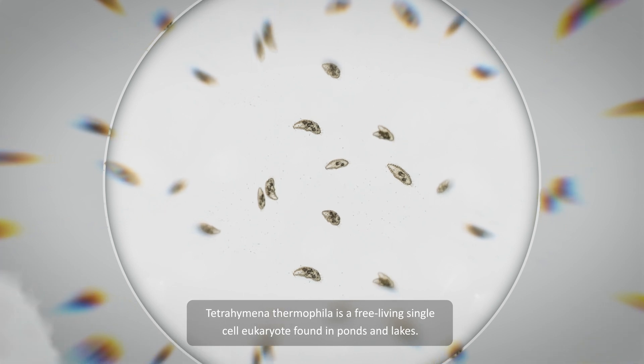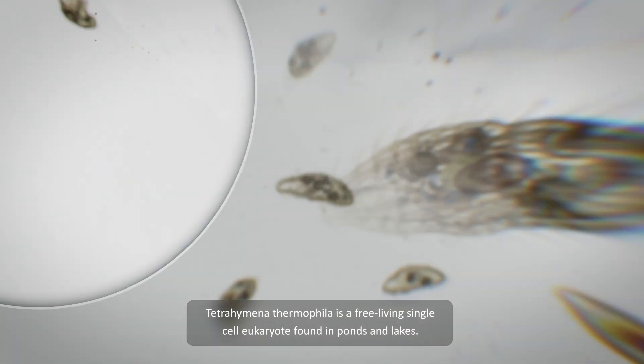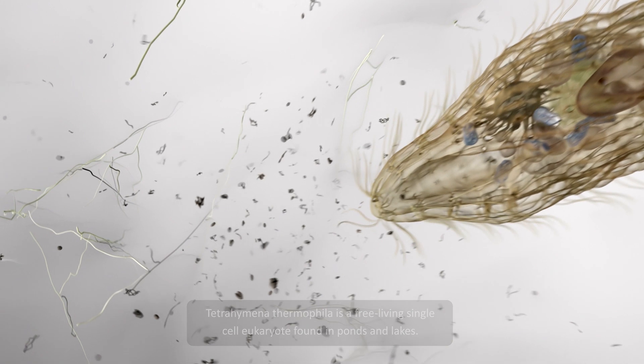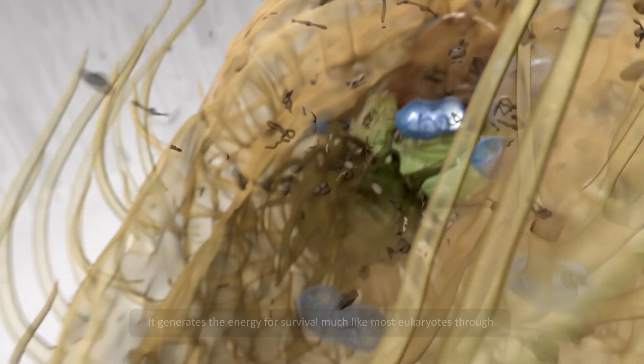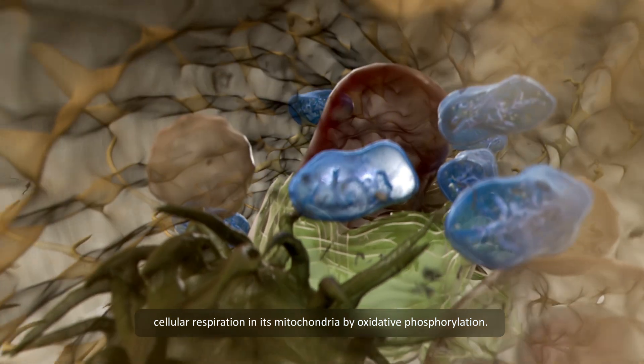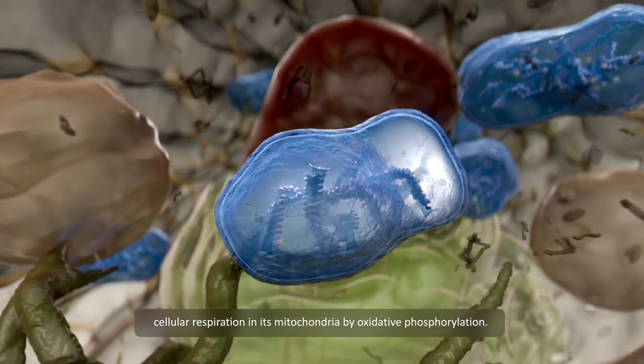Tetrahymena thermophila is a free-living single-cell eukaryote found in ponds and lakes. It generates the energy for survival, much like most eukaryotes, through cellular respiration in its mitochondria by oxidative phosphorylation.